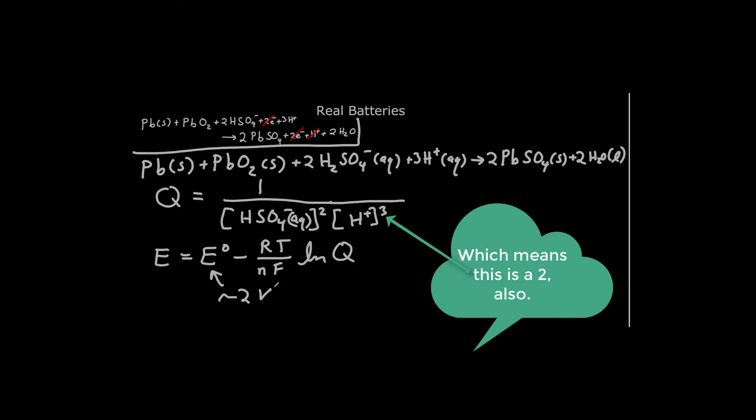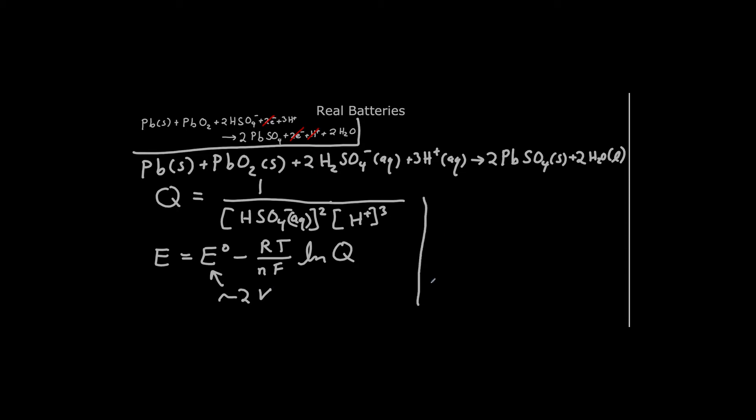Okay, so what happens to the voltage over time? Let's write Q as a function of T. We know over time we're going to create more products, and we're going to use up our reactants. So I want you to pause for a second and think about what's going to happen with Q over time, if it's going to go up, if it's going to go down, if it's going to stay the same. Pause the video and write down your answer.